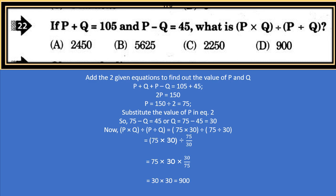Substituting P = 75 and Q = 30 into P × Q ÷ (P ÷ Q): we get 75 × 30 ÷ (75/30). Solving the bracket first, 75 ÷ 30 = 75/30. When the division sign changes to multiplication, we take the reciprocal: 75 × 30 × 30/75. The 75s cancel, giving 30 × 30 = 900.